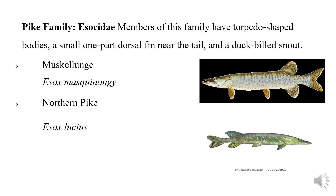The last family is the pike family (Esocidae). Members have torpedo-shaped bodies, a small one-part dorsal fin near the tail and a duck-bill snout. They are easily distinguished by their long cylindrical bodies and duck-shaped bill. Their large mouth contains needle-sharp teeth, which are very effective in grasping and holding fish. Pike have a forked tail and a single dorsal fin located far back on the body. Examples are muskellunge and northern pike.